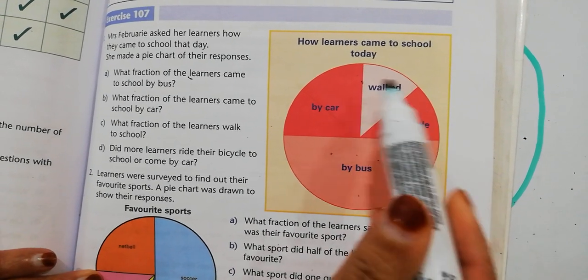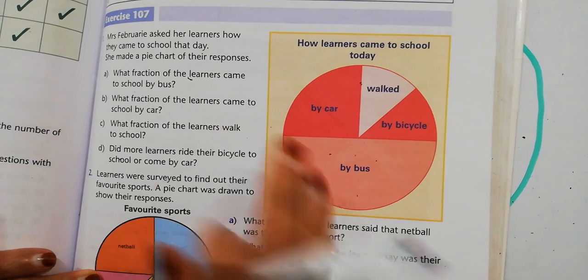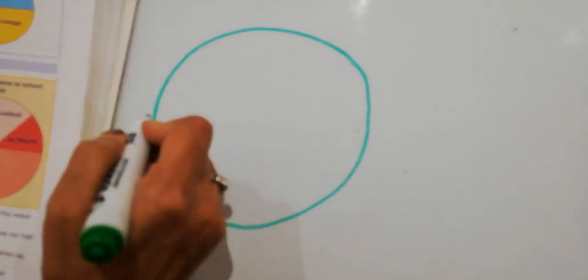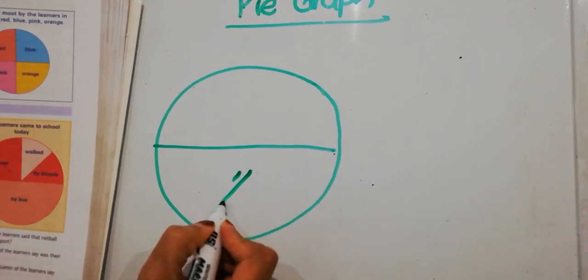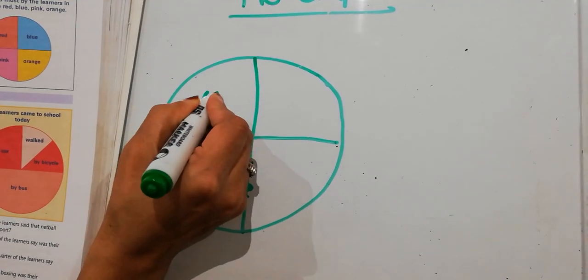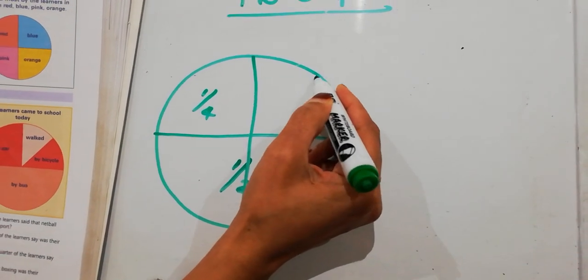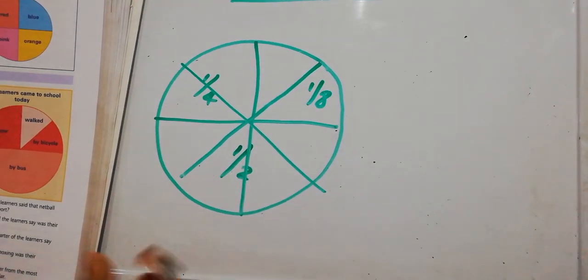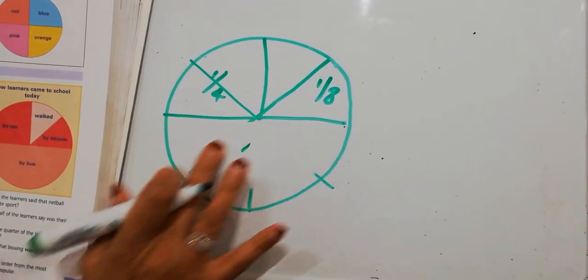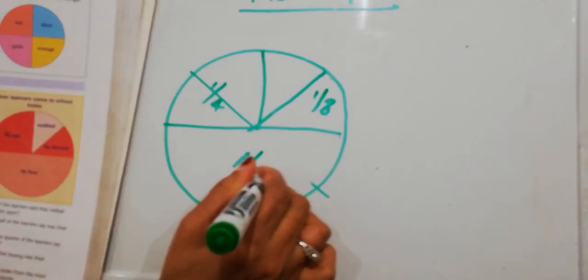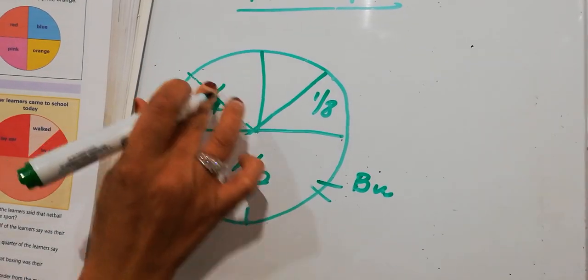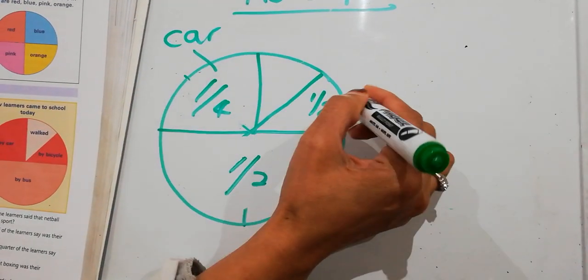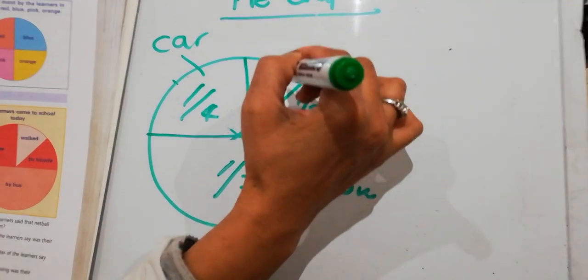This pie graph here is about how learners came to school. So some came by bus, some by bicycle, by car, and some walked. Now let's represent this here onto the whiteboard. It's like having a pie. If I cut it in half, straight away I know this is half. If I cut it into four parts, I know straight away this is a quarter. If I cut the quarters into half again, then straight away I know that this represents one eighth. But I'm going to take these other lines out. Because half was by bus, quarter was by car, and one eighth by bicycle, and one eighth walked.